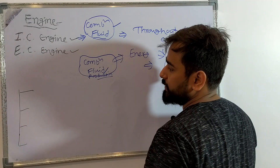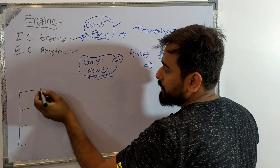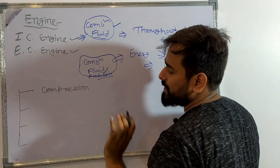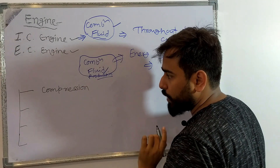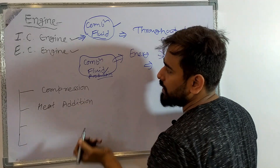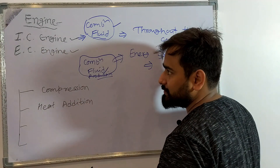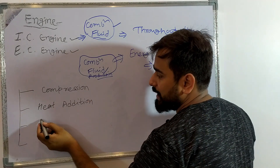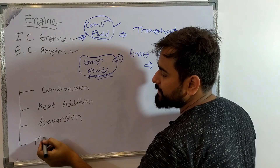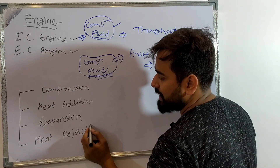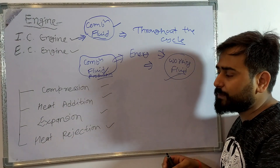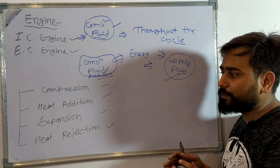What is the process in any cycle? There are four processes. The first is compression — isentropic compression. The second is heat addition. The third is expansion. The fourth is heat rejection. Whether it's Rankine cycle, Otto cycle, Diesel cycle, or any other — you will find these same four things. Even in reverse Rankine cycle, you will find four things.